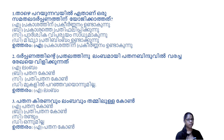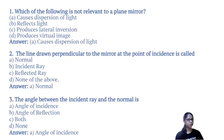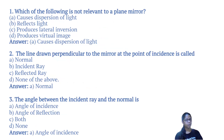Which of the following is not relevant to a plane mirror? Plane mirror causes dispersion of light. The line drawn perpendicular to the mirror at the point of incidence is called the normal. This angle is called the angle of incidence.